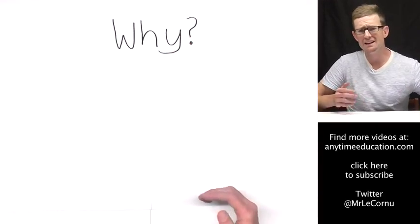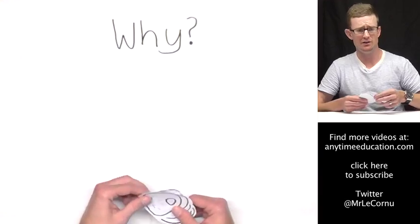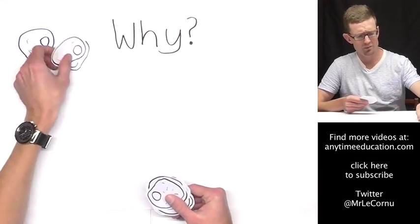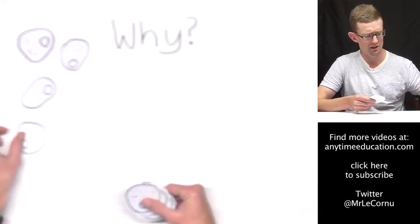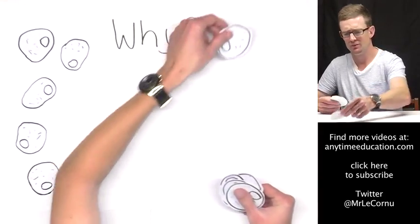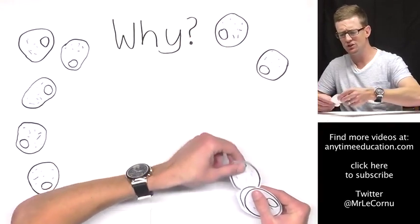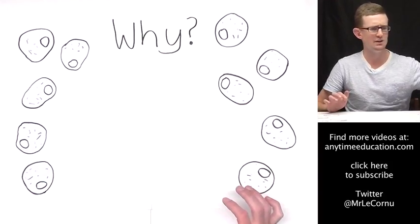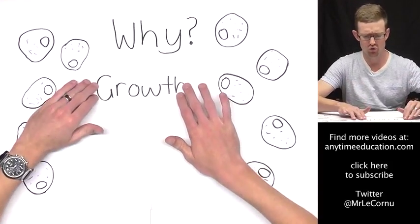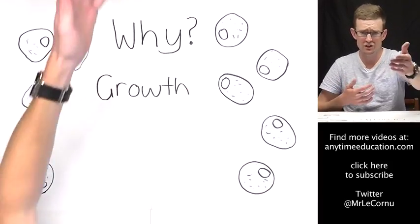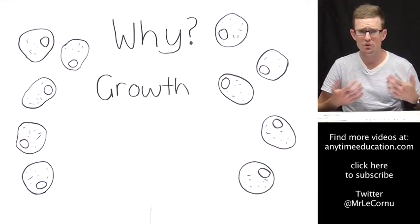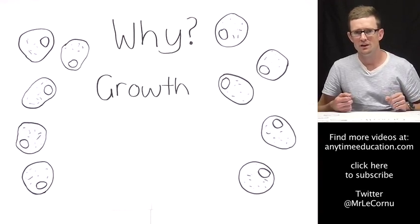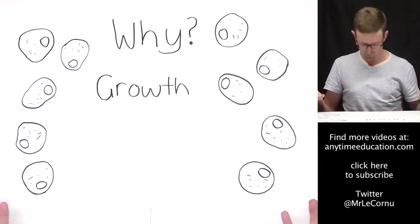So why is DNA replication necessary? Well, it's necessary because new cells are being made all the time, and we're making new cells all of the time because living things need new cells for things like growth. If you take you and me for example, we started our lives as one cell. We have grown to the point where we are now made of trillions of cells.